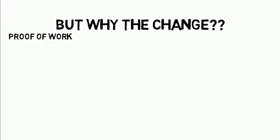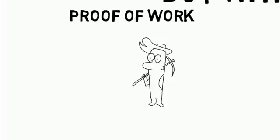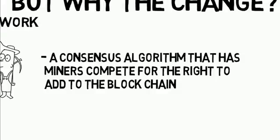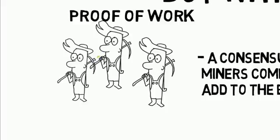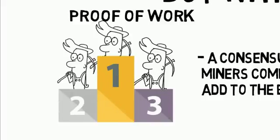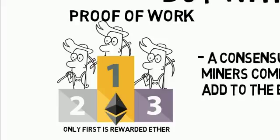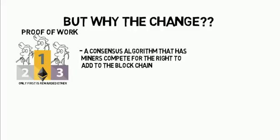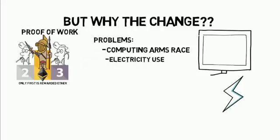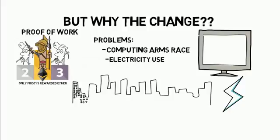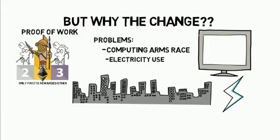But why the change? Right now, Ethereum is using Proof-of-Work, which is a consensus algorithm that has miners compete for the right to add to the blockchain, because only the one that solves the computational puzzle first gets the right to add to the blockchain and is rewarded Ether. This causes an arms race for computing, which drives up the need for electricity and server farms dedicated to mining. The average daily use of electricity for Ethereum right now can power almost half a million U.S. homes.